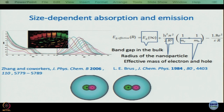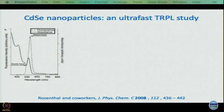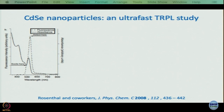Now let us talk about ultrafast time-resolved photoluminescence study of cadmium selenide. This is a paper by Rosenthal and co-workers. The solid line denotes the absorption spectrum and the dashed line denotes the fluorescence spectrum. Rosenthal called it fluorescence rather than photoluminescence because the model they used involved singlet and triplet states, though this is not accepted universally — people are more comfortable calling it simply photoluminescence.